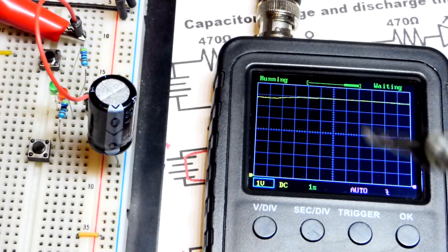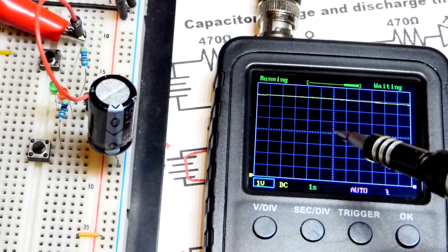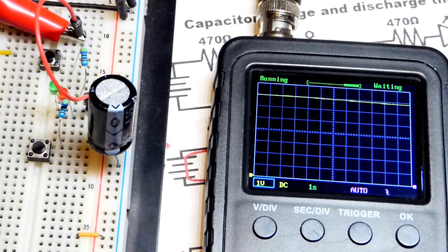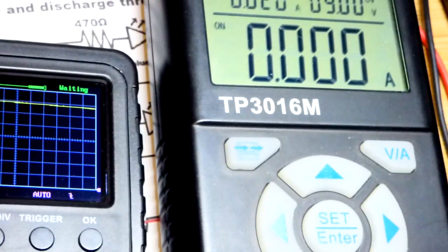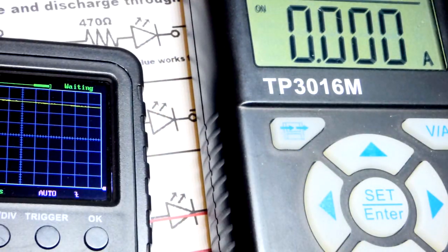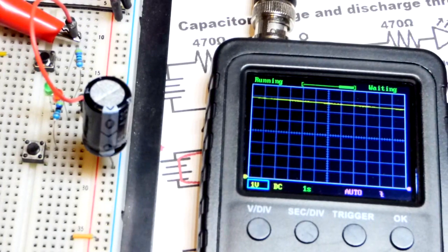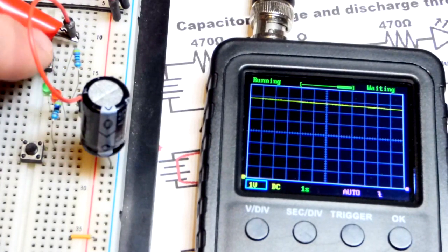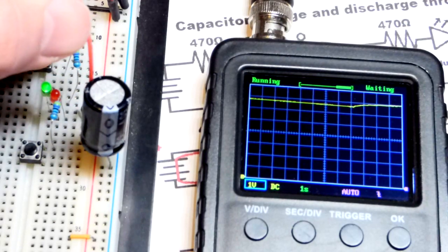This is one volt per division. We got one, two, three, four, five, six, seven right there. That's because this is a green LED. We are using a nine volt power supply right there and it's blocking about two volts at low current approximately. At very low current, and at higher currents it blocks a little bit more.